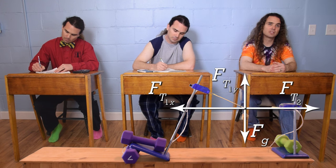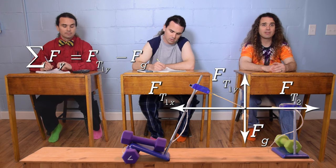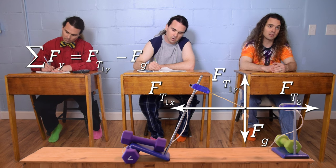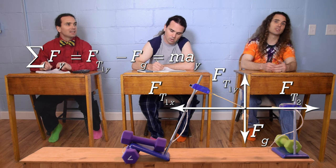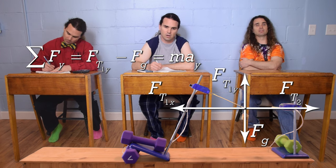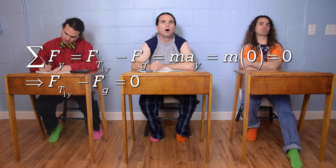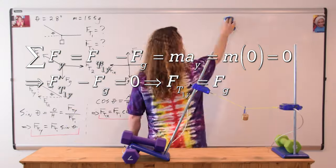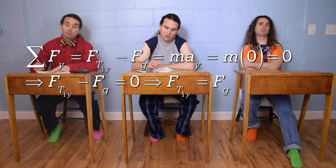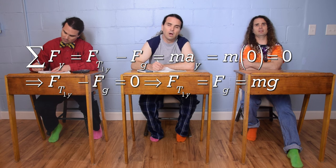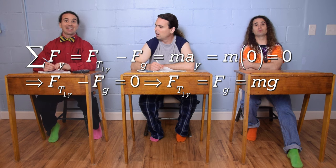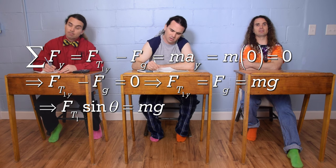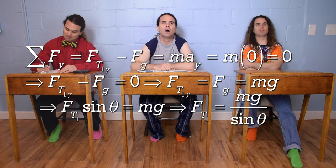Bo, could you please do step number four? We need to sum the forces. Let's start with the y direction. The net force in the y direction equals the force of tension one in the y direction minus the force of gravity, and equals mass times acceleration in the y direction. The hanging mass isn't moving in the y direction, so its acceleration is zero. Therefore, the tension force one in the y direction minus the force of gravity equals zero, which gives us the force of tension one in the y direction equals the force of gravity. For the force of gravity we substitute mass times the acceleration due to gravity, and from the equation holster, the force of tension one in the y direction equals the force of tension one times the sine of theta. Dividing by sine theta gives us the force of tension one equals mass times the acceleration due to gravity divided by the sine of theta.